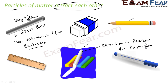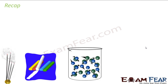It is the attraction between the particles that decides the strength of a given material. This also proves that particles attract each other. So what have we studied? Matter is anything which has mass. It is made of particles. These particles are in constant motion, they attract each other, they are very small in size, and they have space between them. Let's do a recap — matter is made of particles.